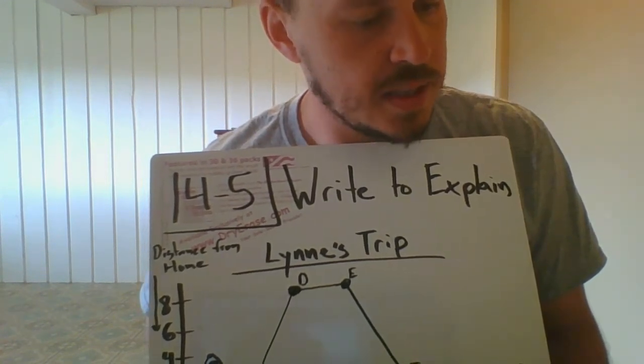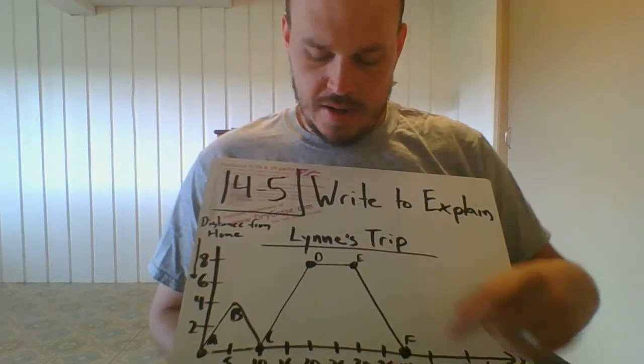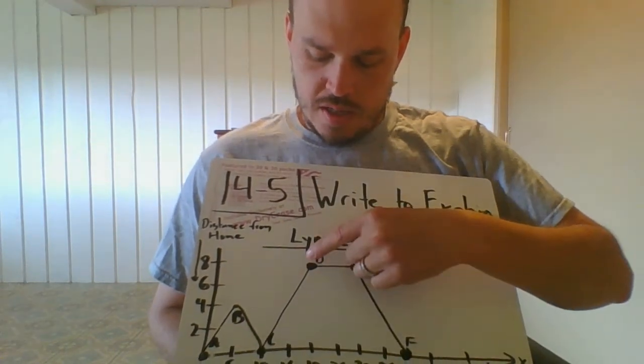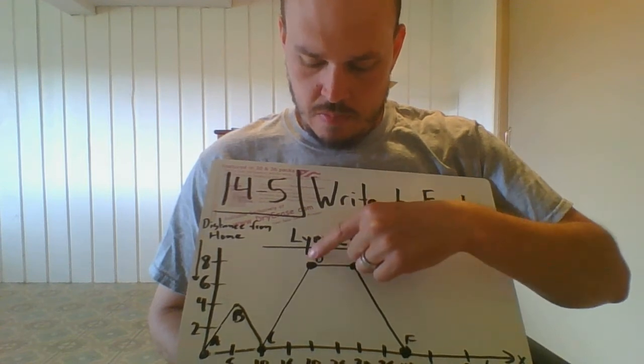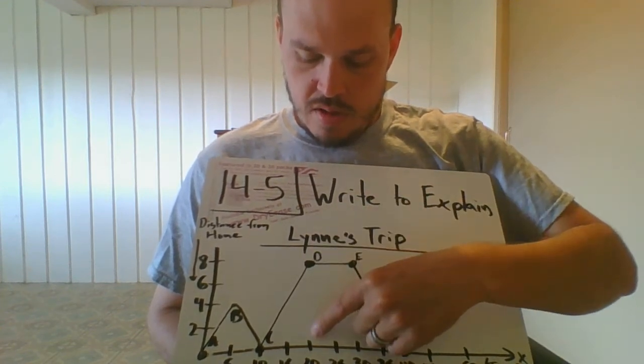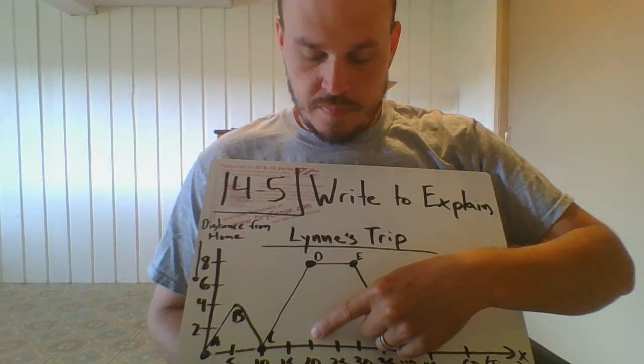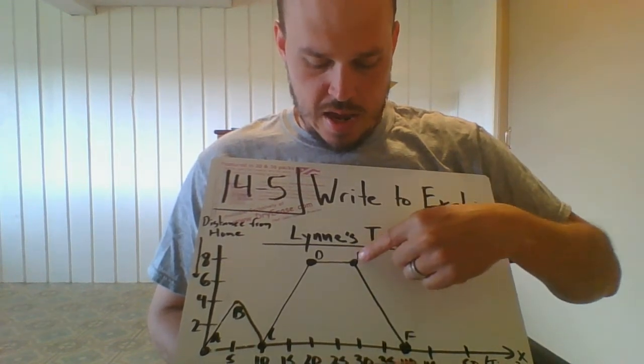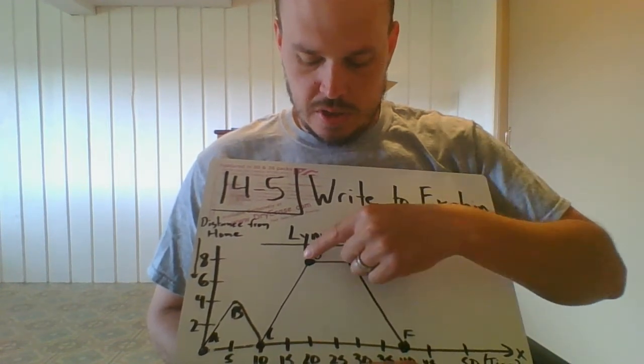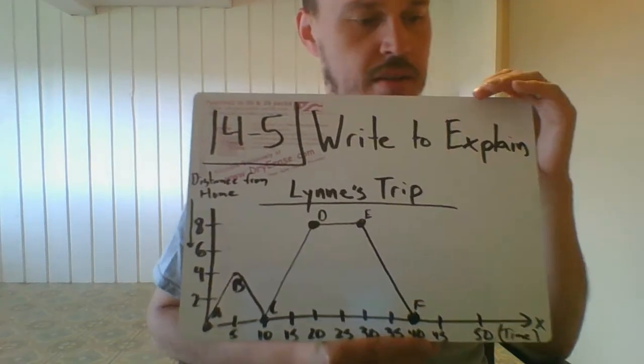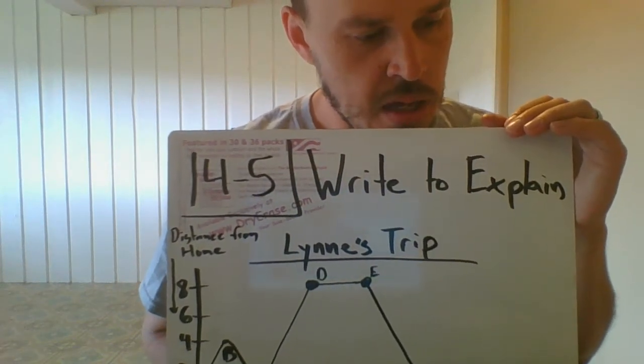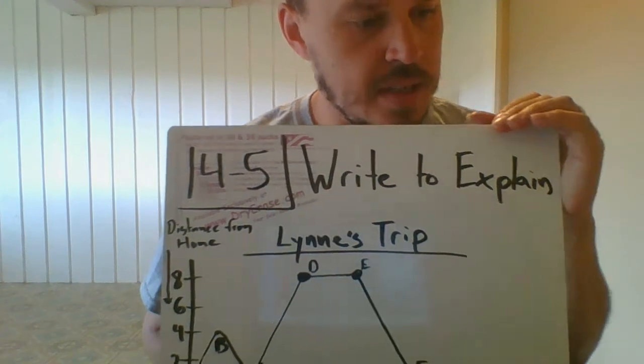Number five on guided practice says: why can you say Lynn shopped for 10 minutes? We can assume this is the trip to the store, the furthest away from home. This was 20 minutes into her journey and at 30 minutes in the journey she left, so she spent about 10 minutes at the grocery store.